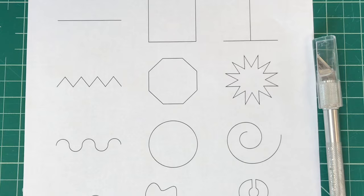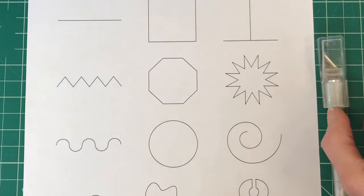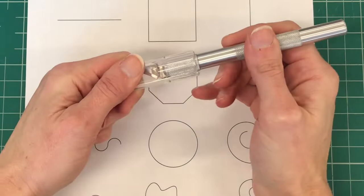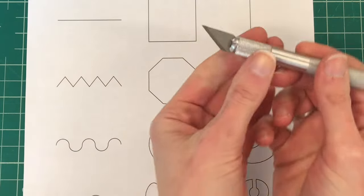When you get your craft knife from your teacher it will have a plastic cap on it. You'll carefully take the cap off and keep it on your tabletop so that you don't lose it.